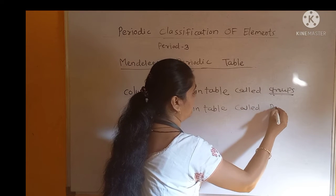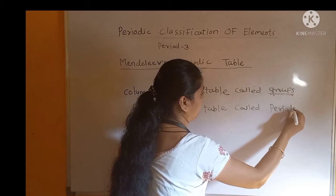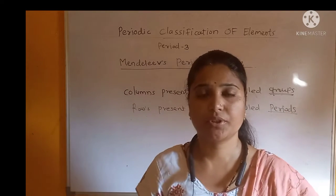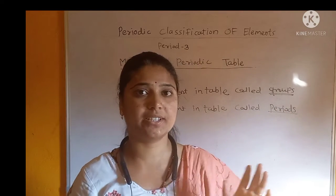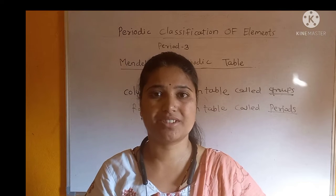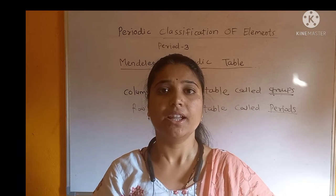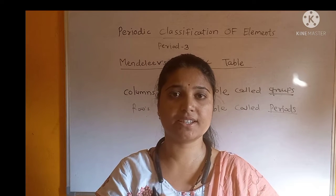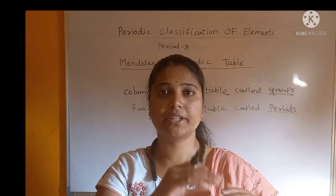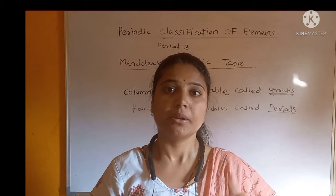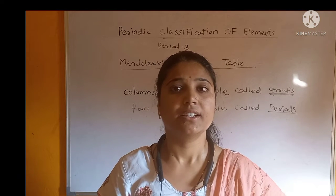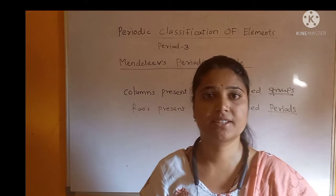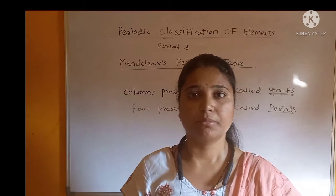The rows and periods together make boxes in the periodic table, and here the elements are situated or placed in the table according to the increasing atomic mass number.